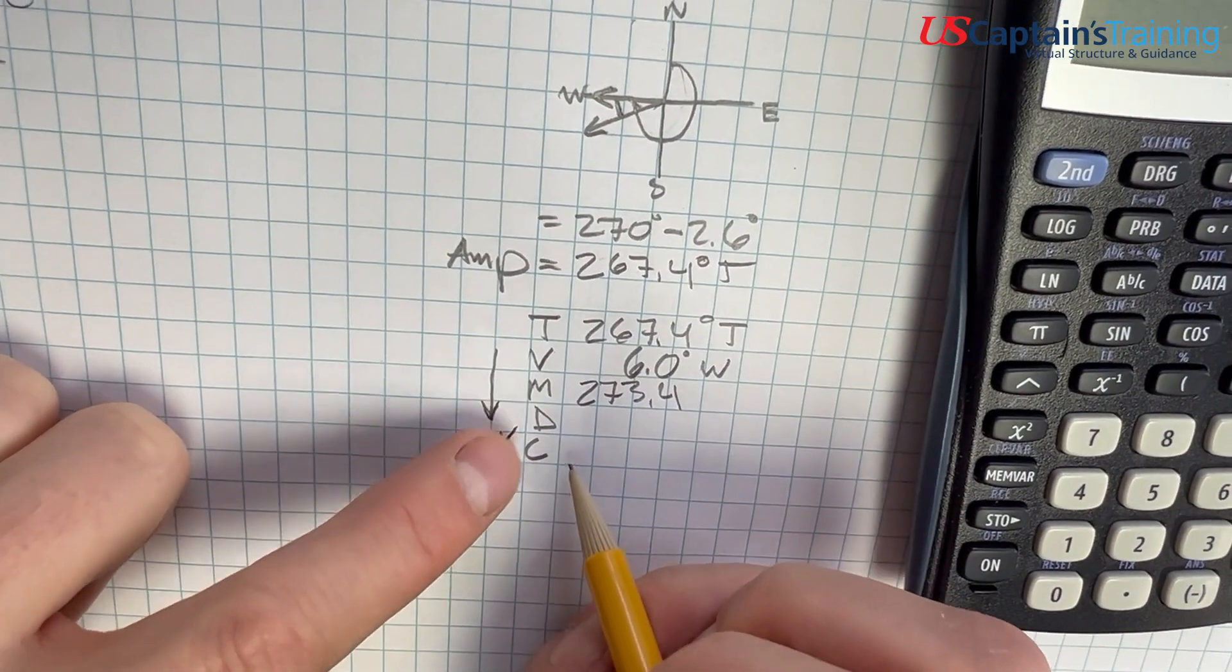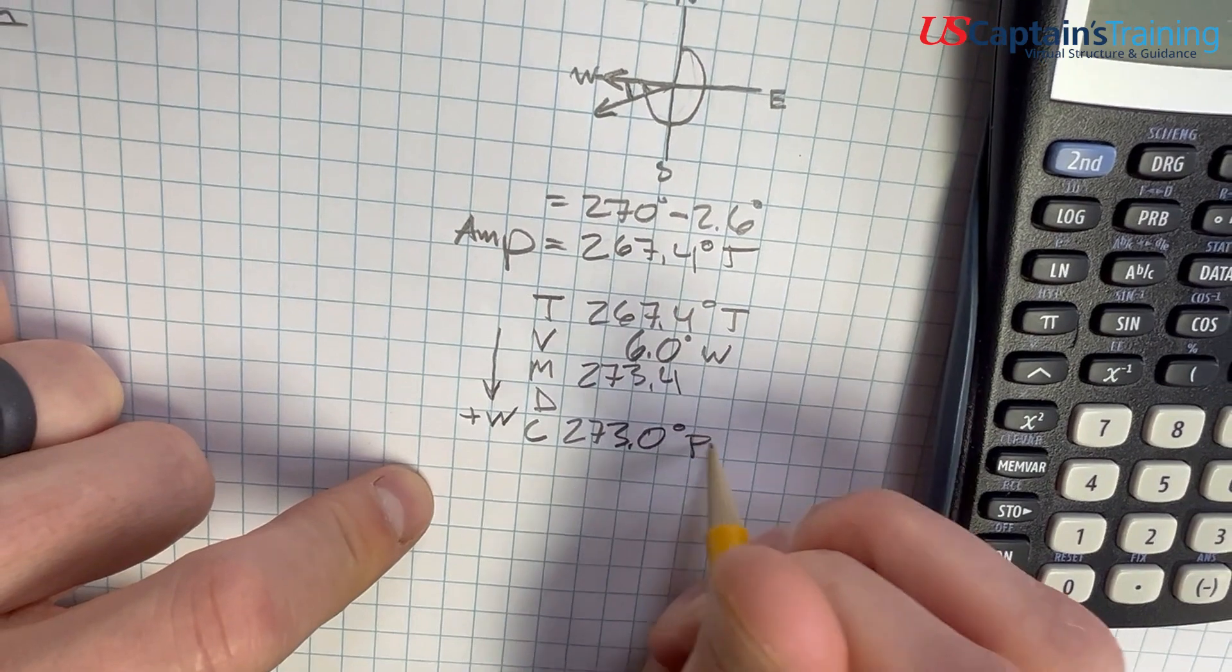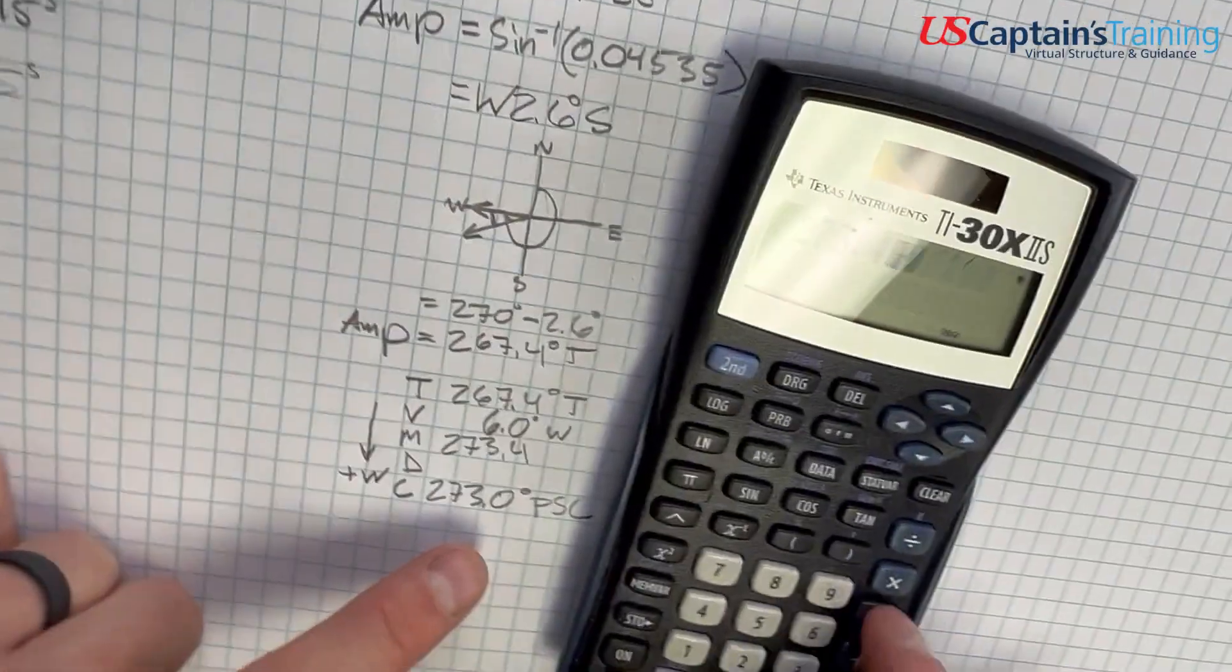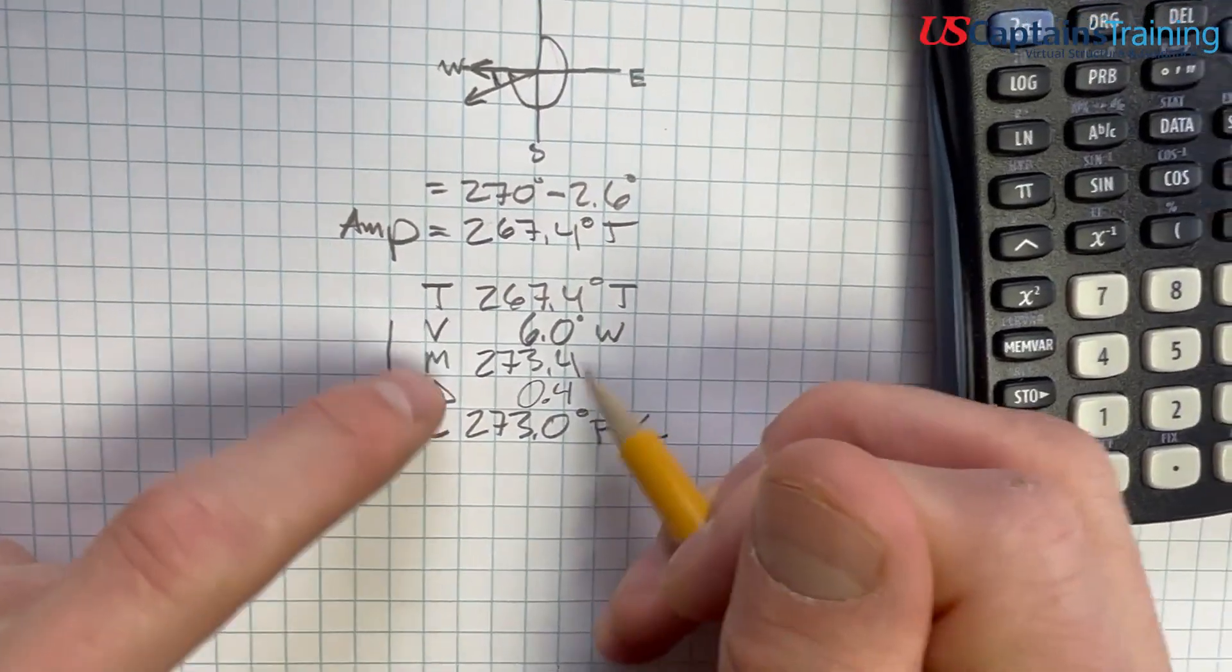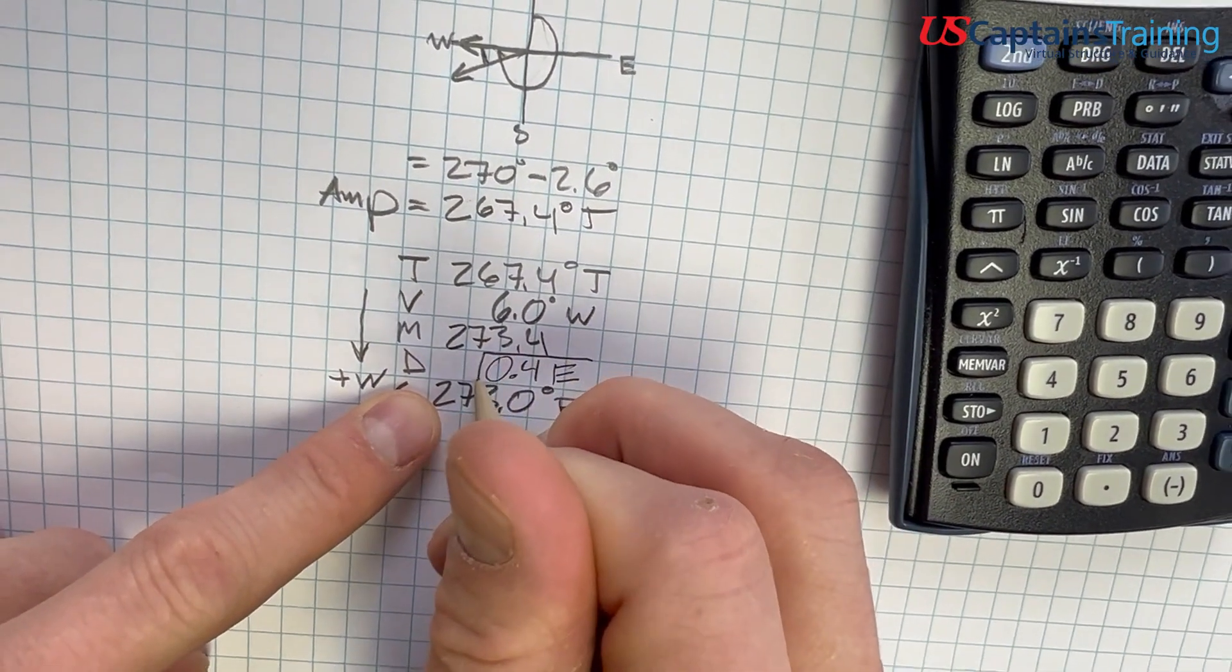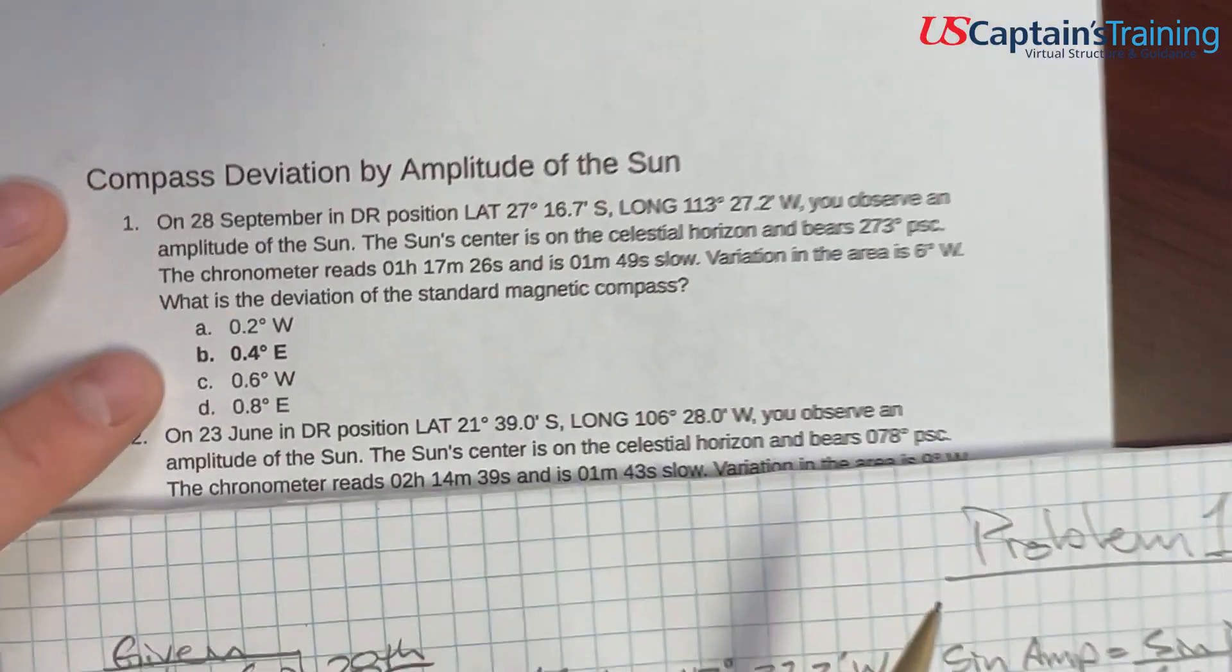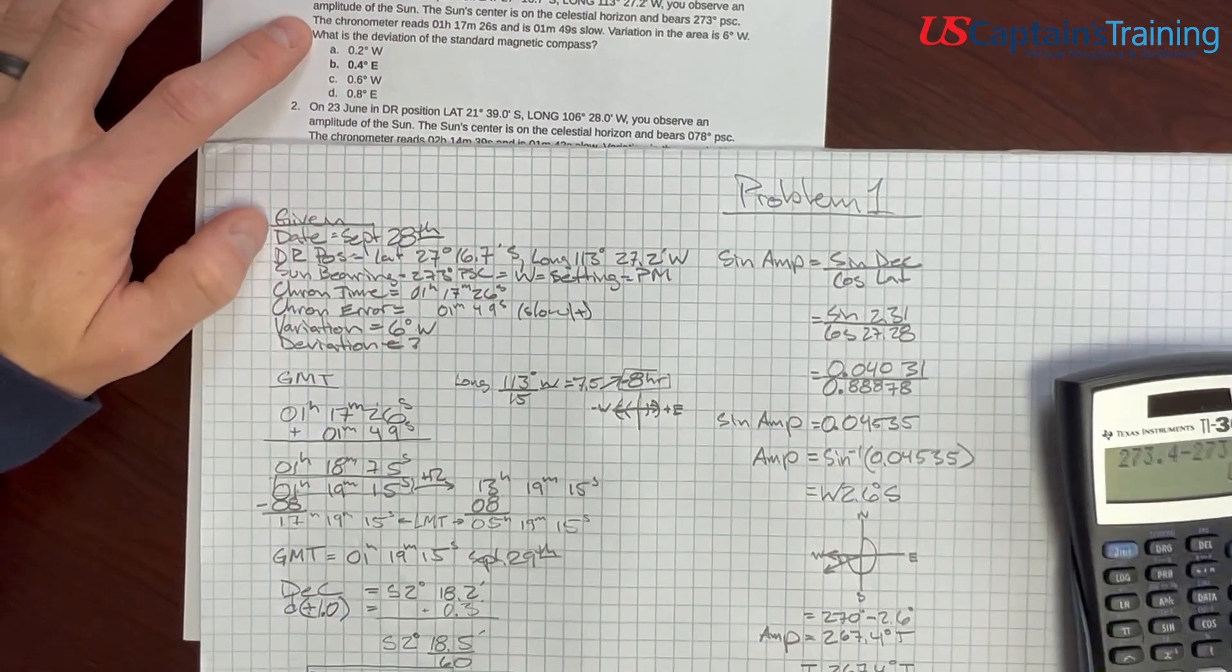We're calculating deviation, but we're given compass: sun bearing 273.0° PSC. The difference between these two is 0.4. Take 273.4 minus 273 equals 0.4. Is this west or east? When we went from 273.4 down, it must be east because we're subtracting it going down. So 0.4° east deviation. And that's the answer to practice problem one using the amplitude method.